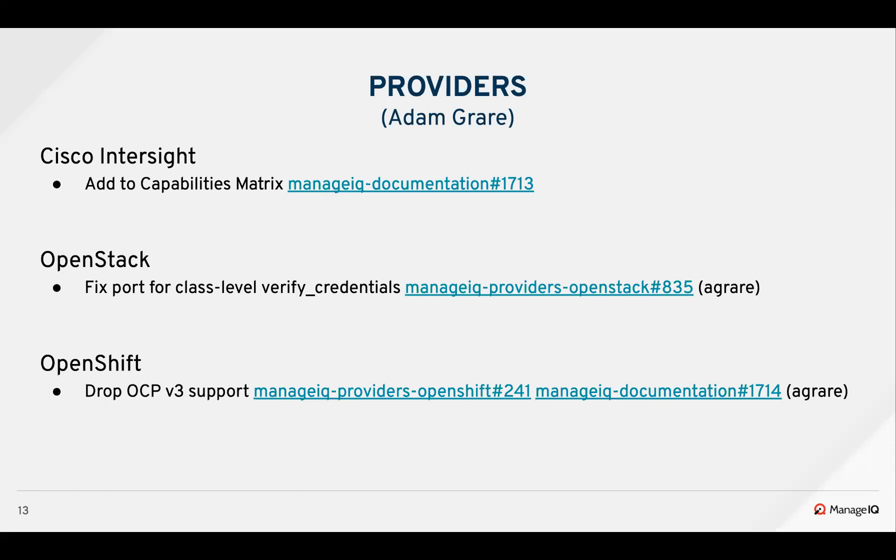For OpenStack, we fixed a bug where the port provided in the form wasn't being honored. It was possible to enter the wrong port when creating or editing the provider — it would succeed and pass verify — but the instance level, which runs on the schedule later on, would fail because the port was wrong. So it would look like everything was added successfully, but nothing would get refreshed. This was due to a discrepancy in how the port was being passed down to the verification code. OpenStack is one of those where they use different code paths for the instance and class level to verify, so that's another reason we need to get that fixed up.